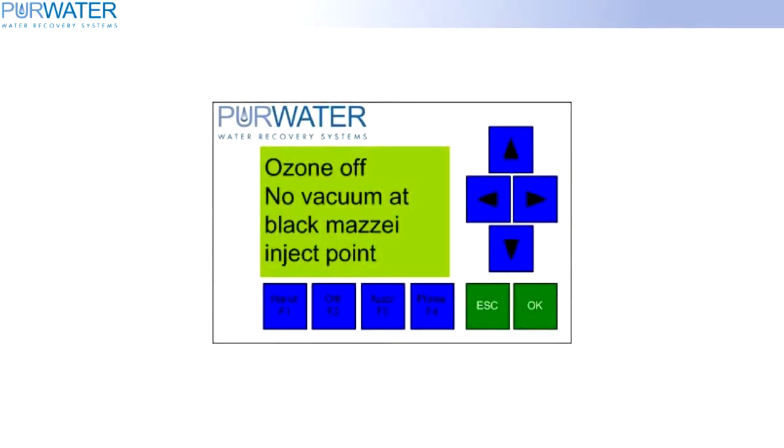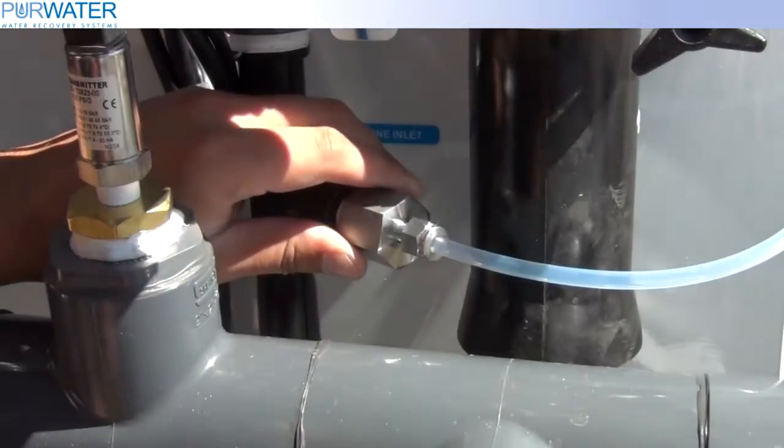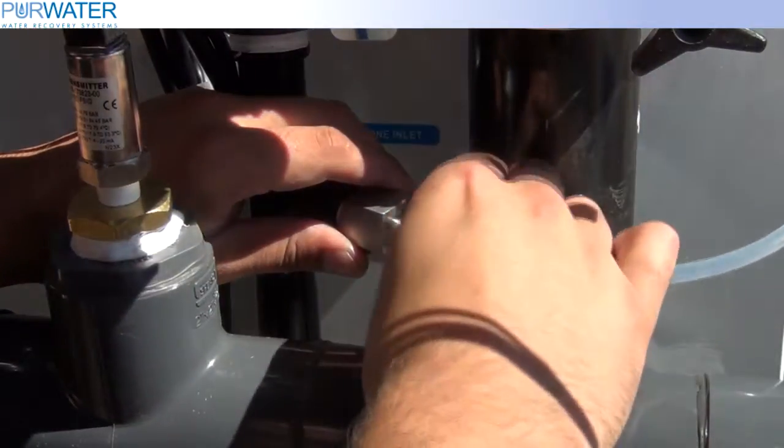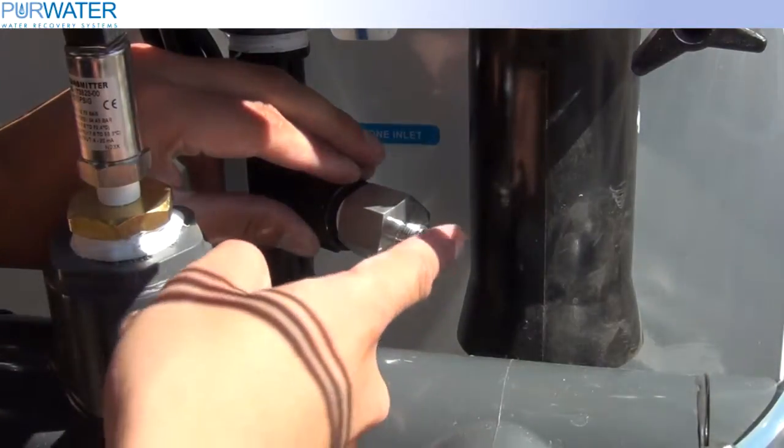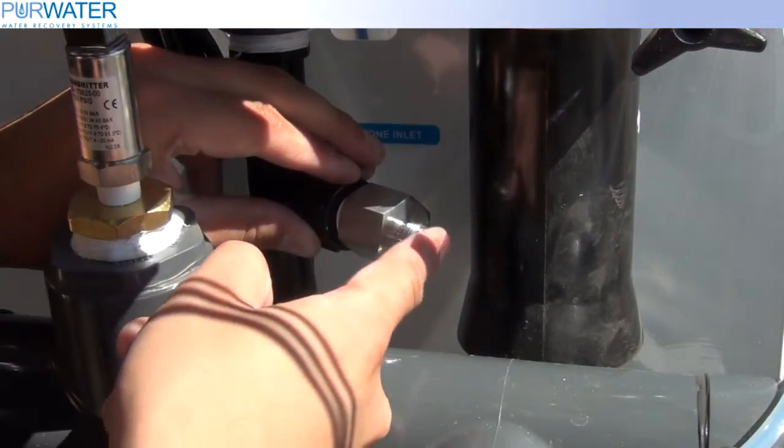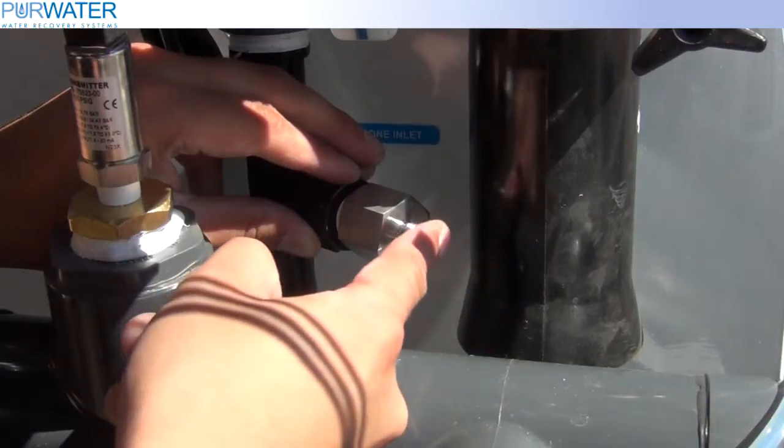If the HMI screen is showing a low vacuum fault, we will need to first inspect the MOSI inductor. Remove the hose from the MOSI inductor and inspect the vacuum or suction with your finger. If there is no vacuum present, remove the MOSI from the machine.